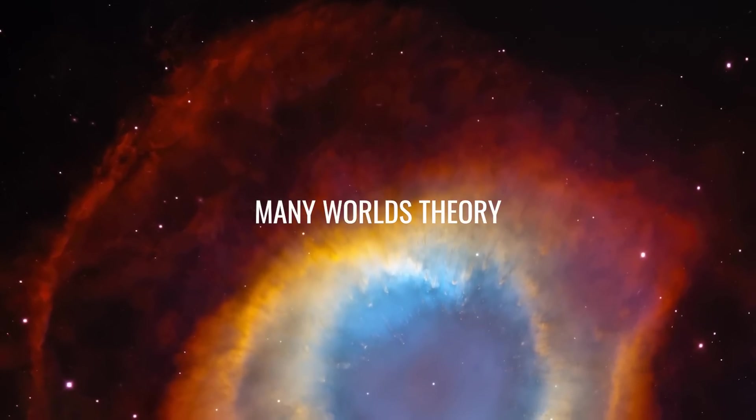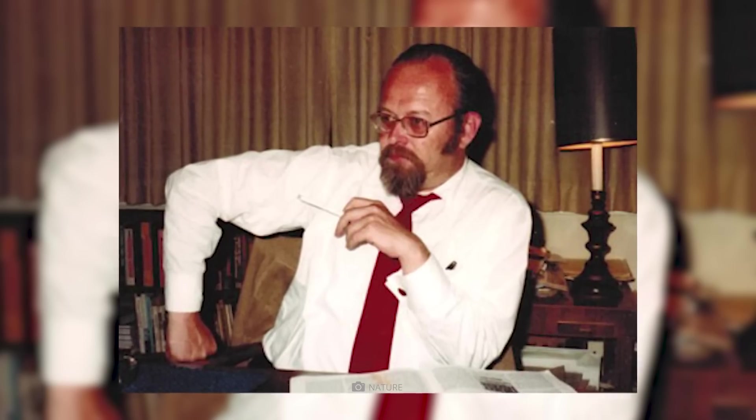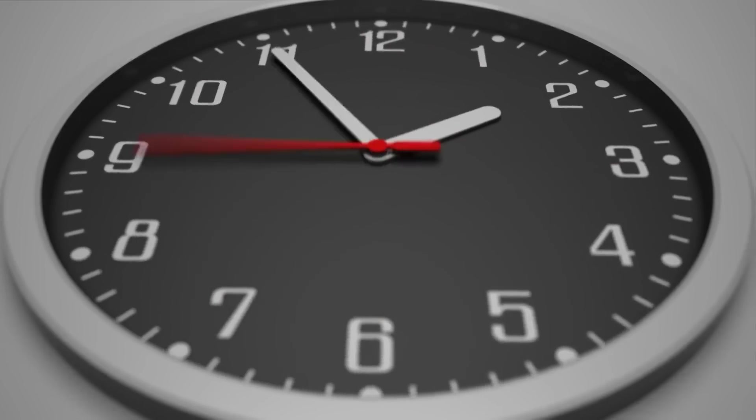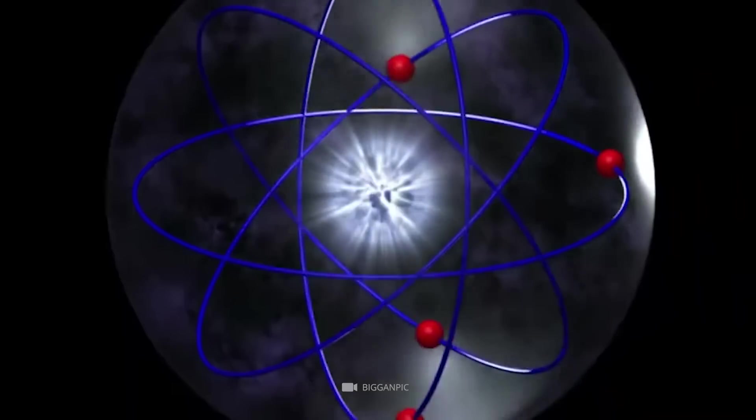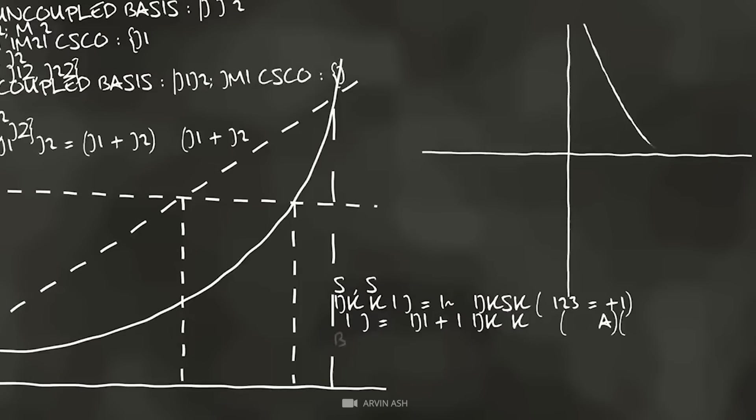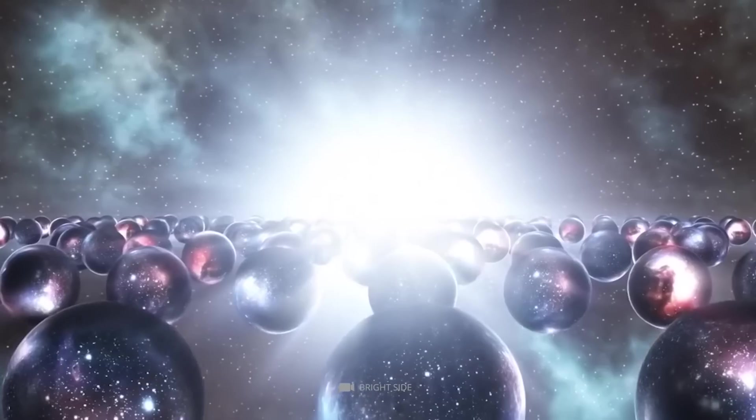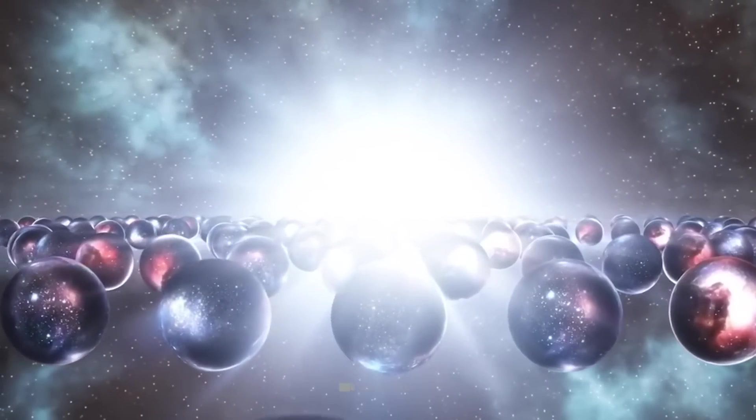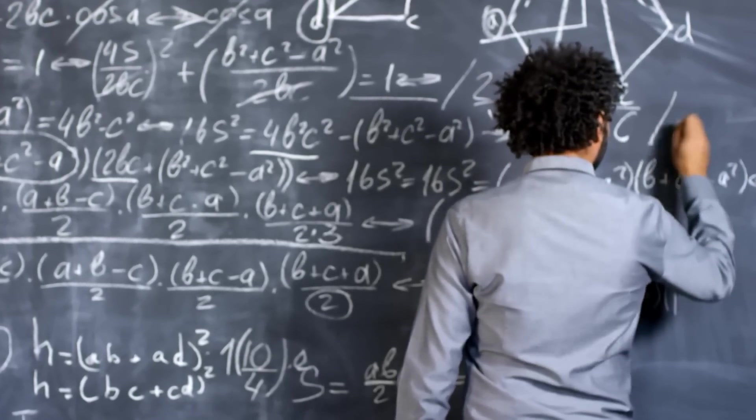Many Worlds Theory. Hugh Everett first conceived the theory in the 1950s. He was a physicist who specialized in quantum physics and field theory. He was also known for his work in quantum mechanics. This concept is called multiverse or many-worlds interpretation, M-theory or the Everett interpretation.